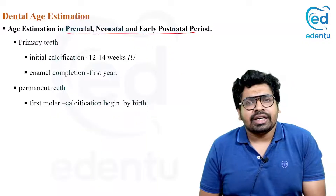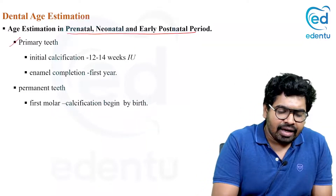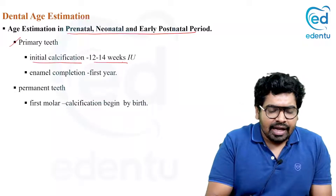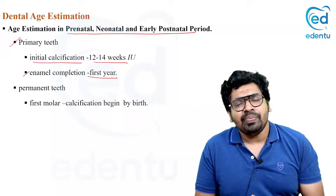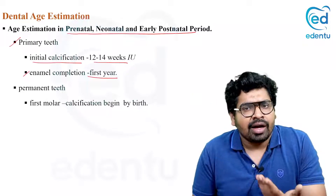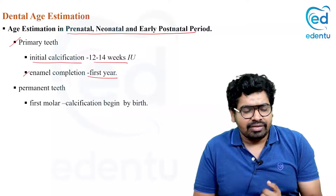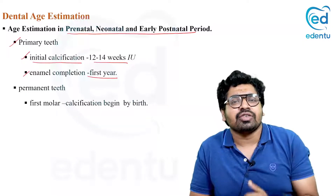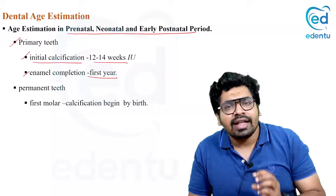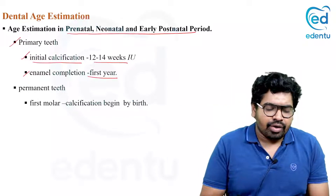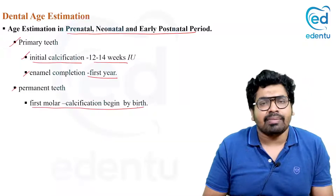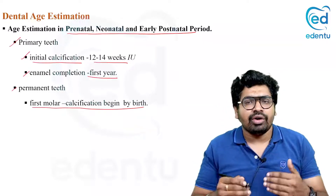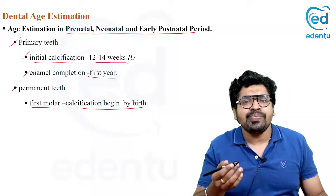For the prenatal, neonatal, and early postnatal period, you can use dental chronology. Primary teeth begin calcification at 12 to 14 weeks of intrauterine life, and enamel is completed by the first year of age. In an autopsy, examining the presence of these primary teeth can identify whether the child has completed one year. The permanent first molar calcification begins at birth, so if first molar calcification is seen, the child can be identified as a newborn.